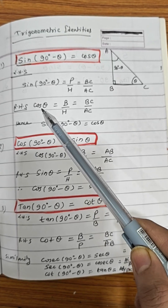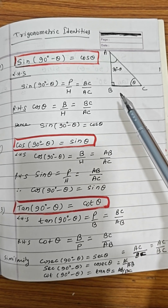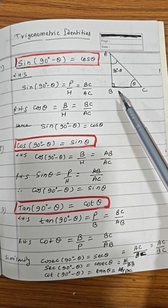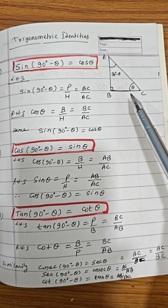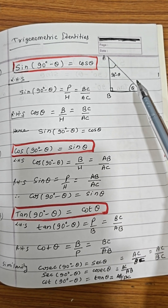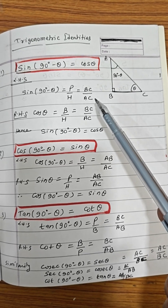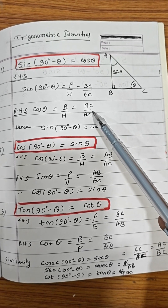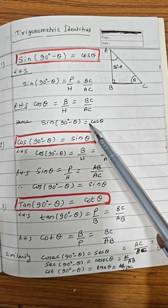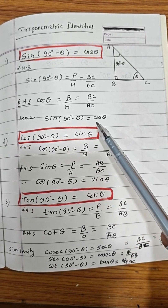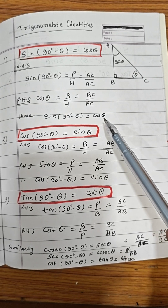Now cos θ — cos θ is base upon hypotenuse. So for angle θ, BC is the base and AC is the hypotenuse, giving BC/AC. Both are BC/AC, therefore this result comes out: sin(90° - θ) = cos θ.